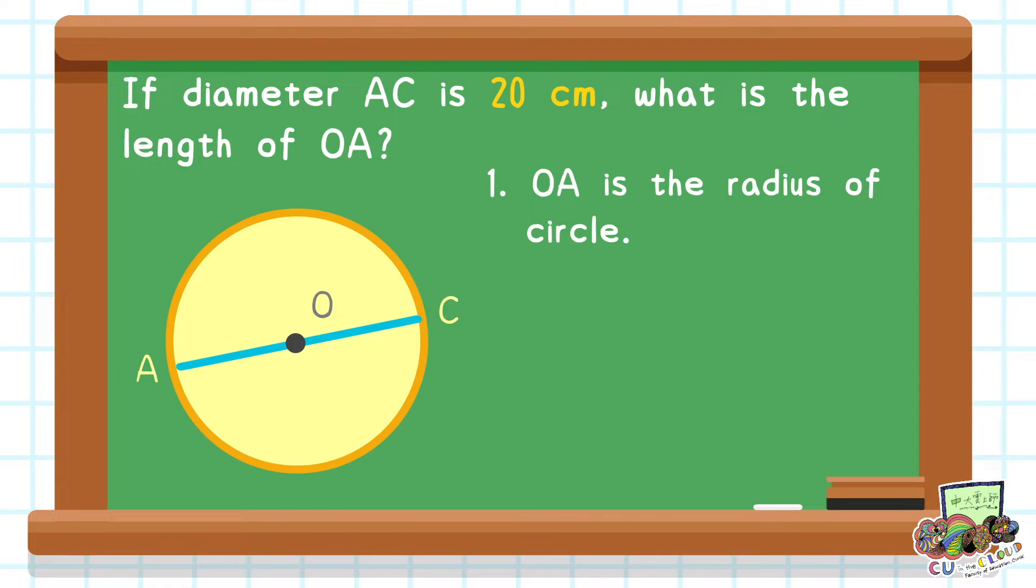OA is the radius of the circle. The diameter is twice the length of the radius. Therefore, the radius can be calculated by 20 divided by 2 which equals 10 cm.